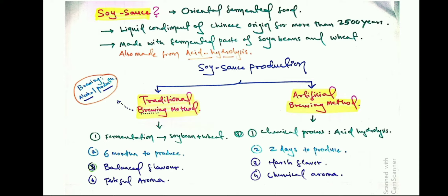Now let's do a comparative study of both methods. First, regarding fermentation: the traditional brewing method involves fermentation of soybeans and wheat, while the artificial brewing method produces soy sauce by a chemical process — acid hydrolysis. Second, regarding time: the traditional brewing method takes about three to six months to produce soy sauce, whereas the artificial method takes only two days. Third, regarding flavor: the traditional method produces a balanced flavor with a tasteful aroma, while the artificial method results in a harsh flavor with a chemical aroma.